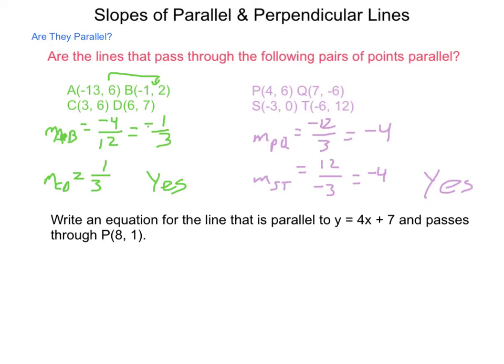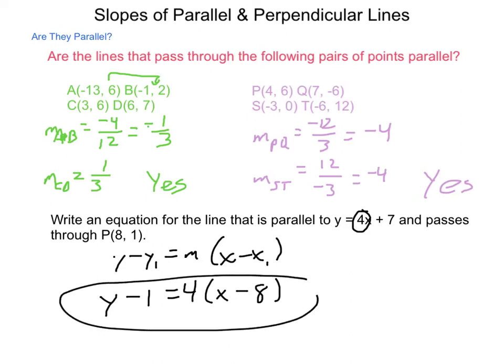Pulling up information from our last lesson, let's write this in point-slope form. Point-slope: y - y1 = m(x - x1). Our slope has to be the same if the lines are to be parallel. So we have slope of 4. Now let's insert our point. Our y1 is 1, our x1 is 8. And we now have an equation for a line that meets this criteria.